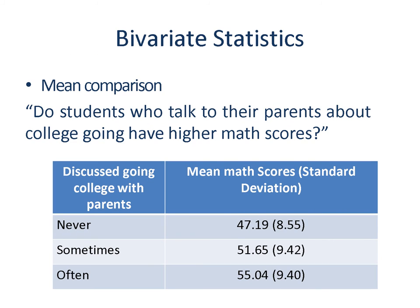Now, what if we want to know if students who talk to their parents about college going have higher math scores? Here we are looking at the relationship between a categorical variable — discussing with parents — and a continuous variable — math scores. We get the mean and standard deviation of math scores among students who answered never, sometimes, and often respectively. We see that students who often discuss college going with parents tend to have a higher math score than students who never or only sometimes discuss it.